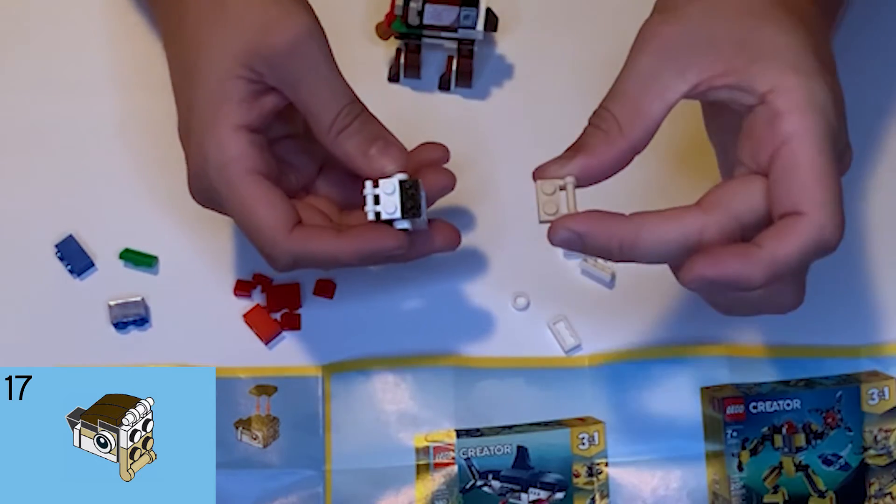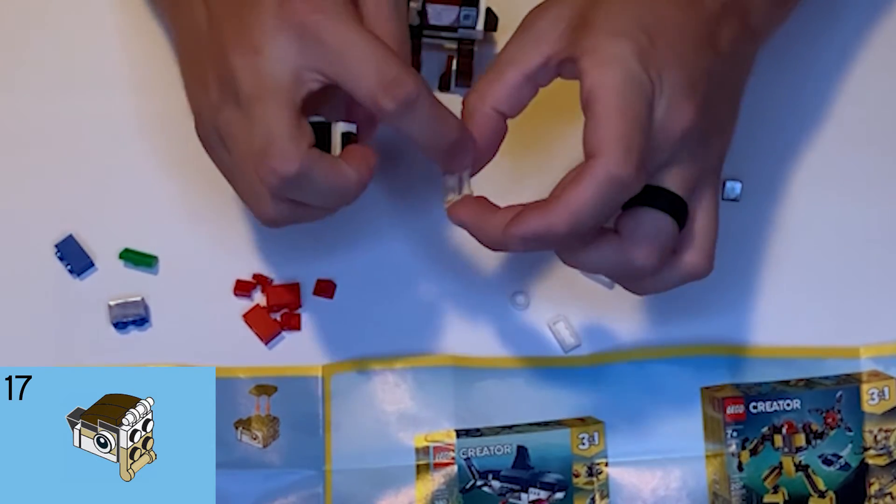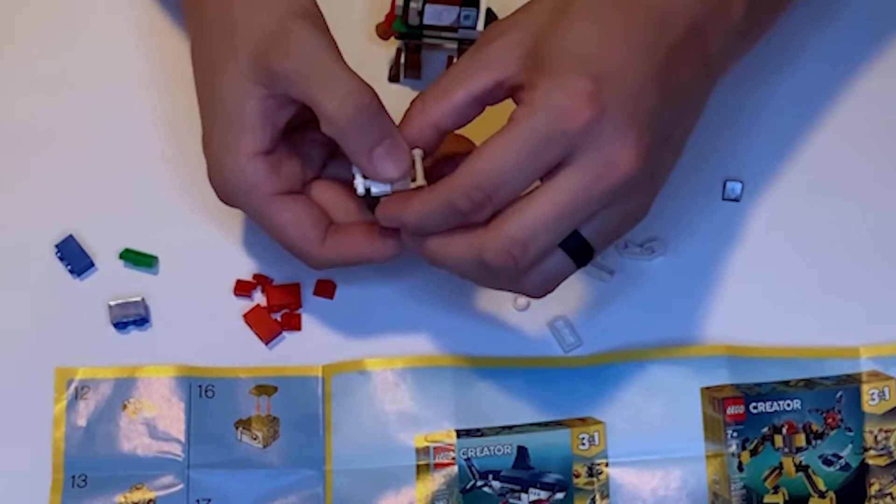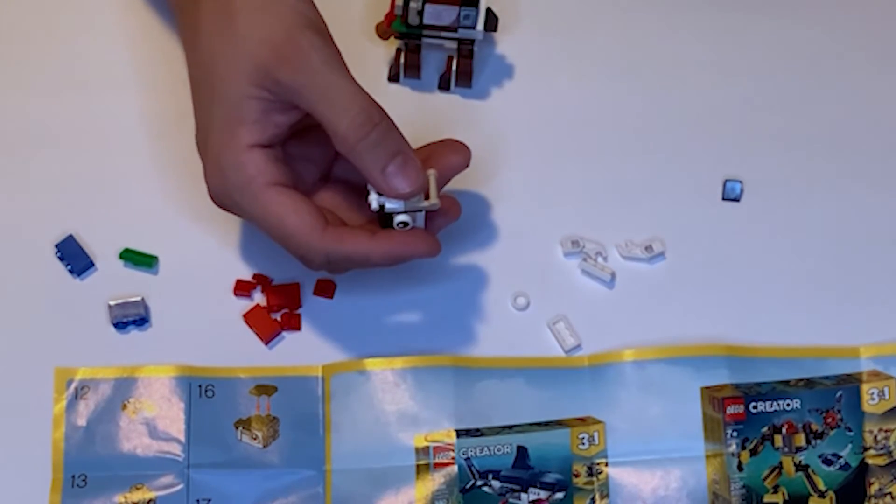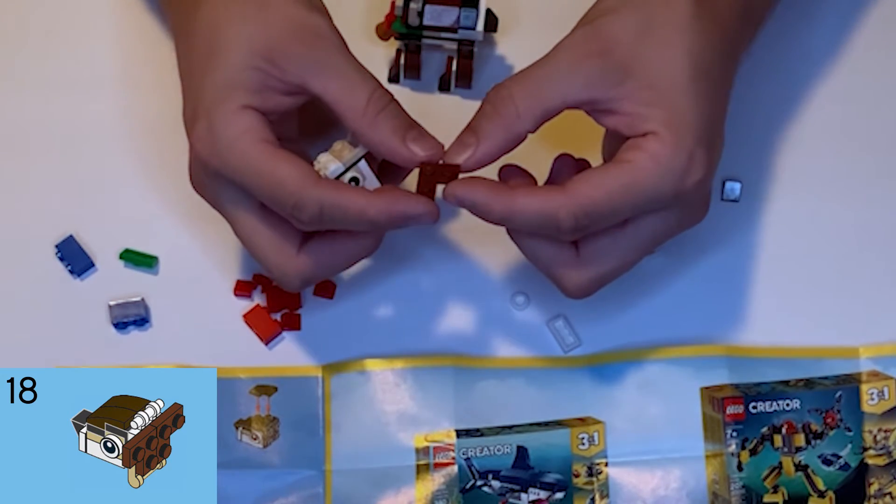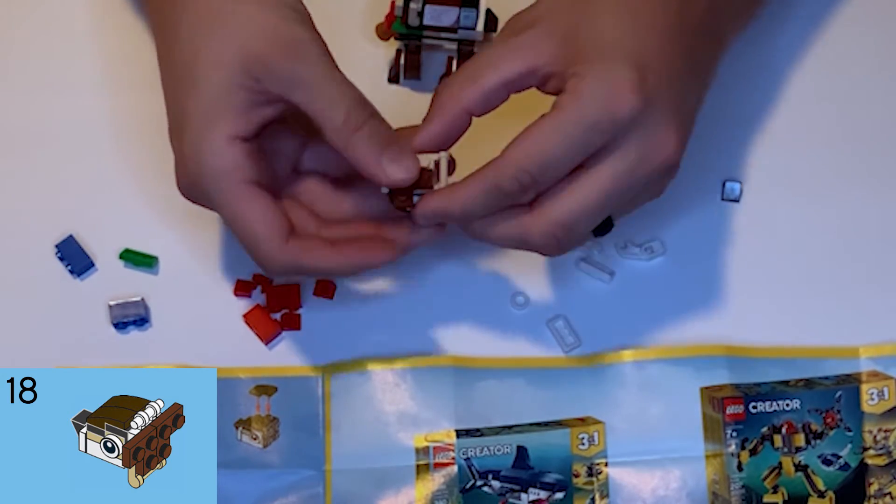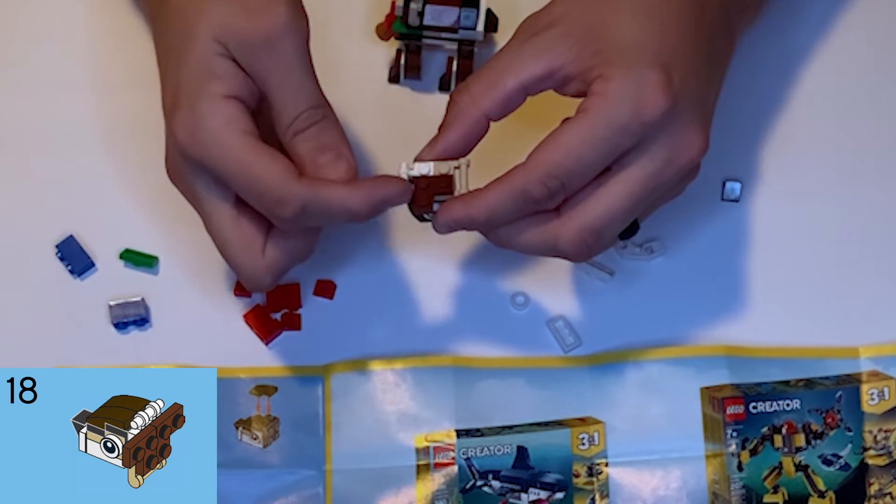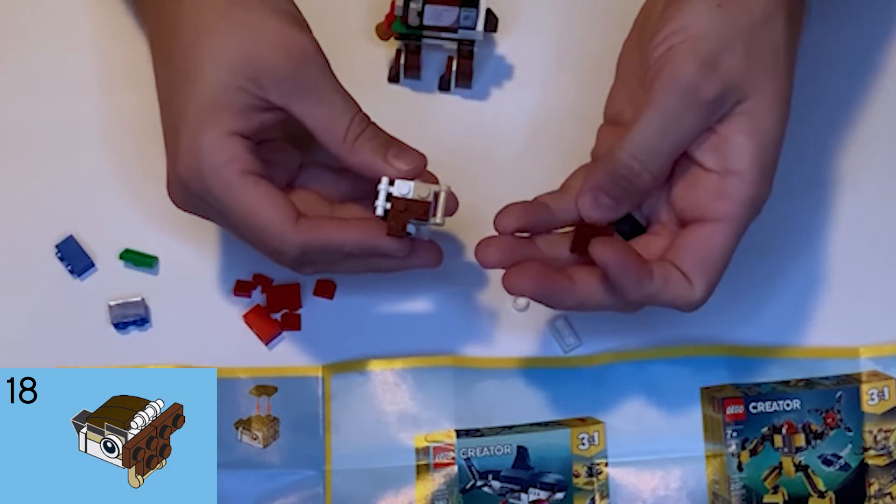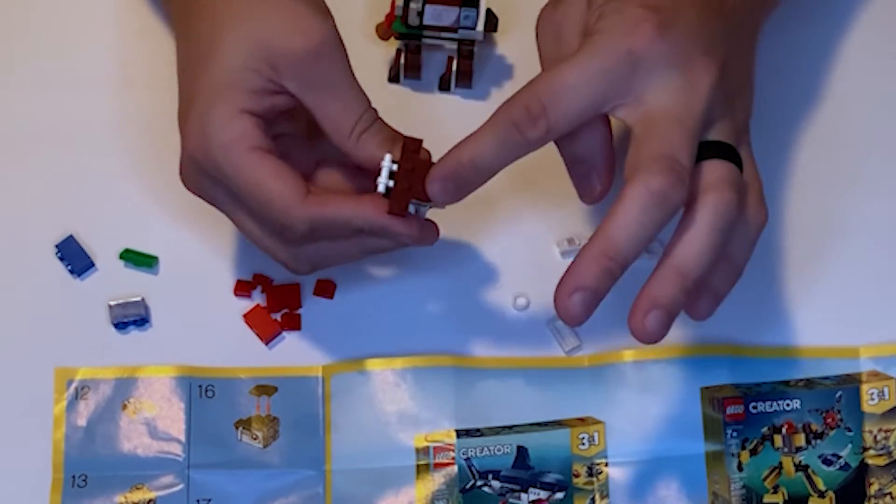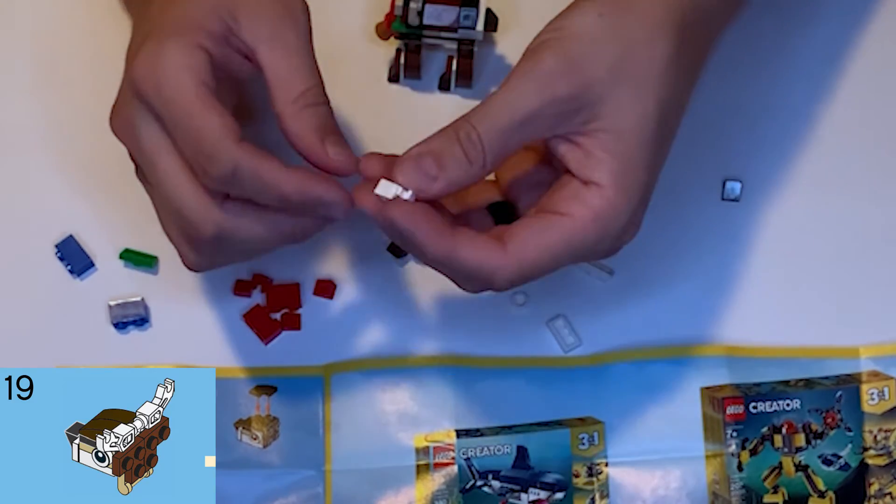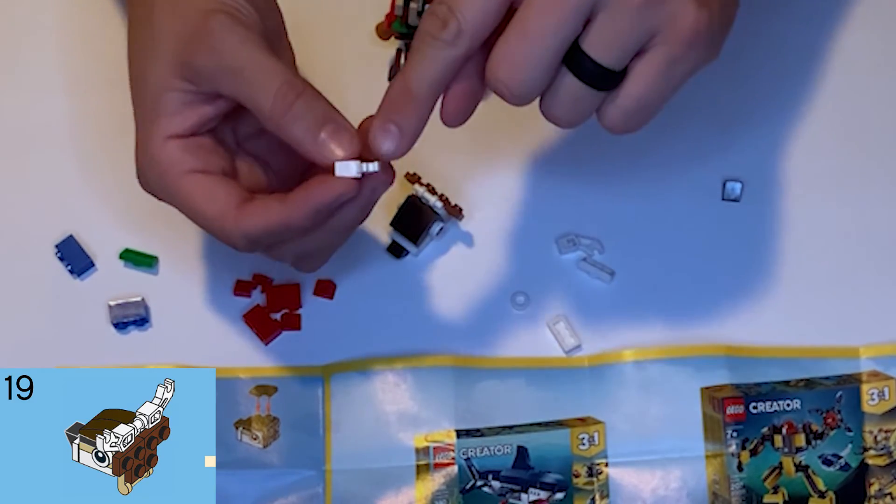We're also going to take this tan 1x2 flat with the bracket and we're gonna put that underneath the white bracket piece. Then in step 18 we have these two brown L-shaped pieces. We're gonna put those on there so that the wider piece part that hangs out is going to be up towards the white bracket, both of them like this, so it makes this T-shape. Then we're gonna take these little claw pieces, like a claw on one end and it has a little hole in the other end. Take two of those and these are going to be our antlers.